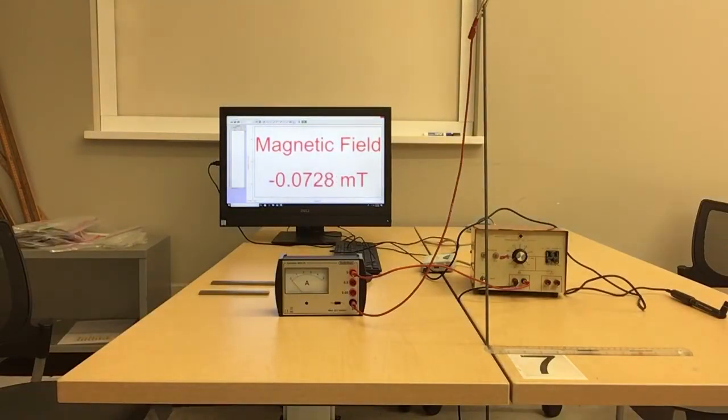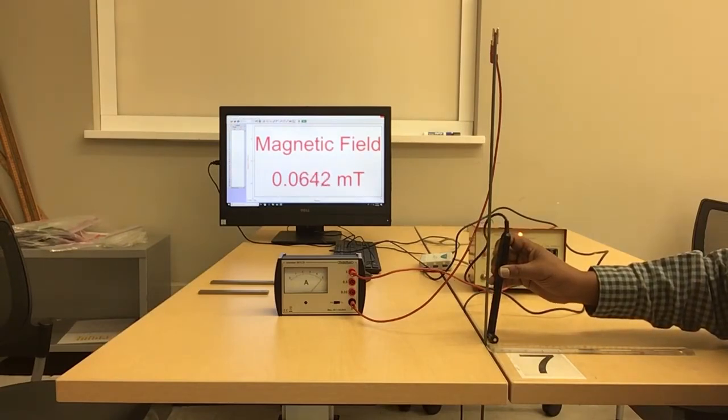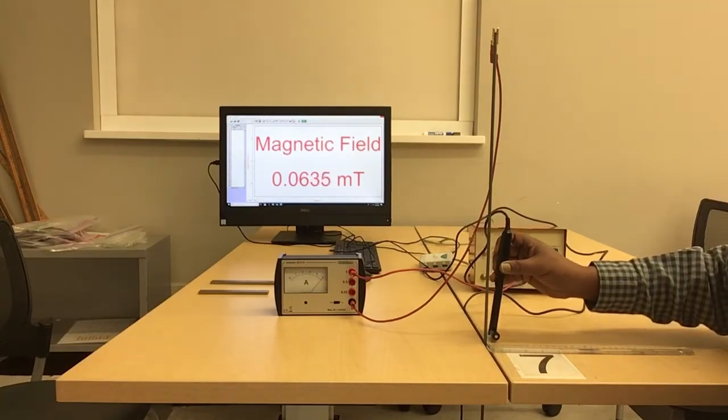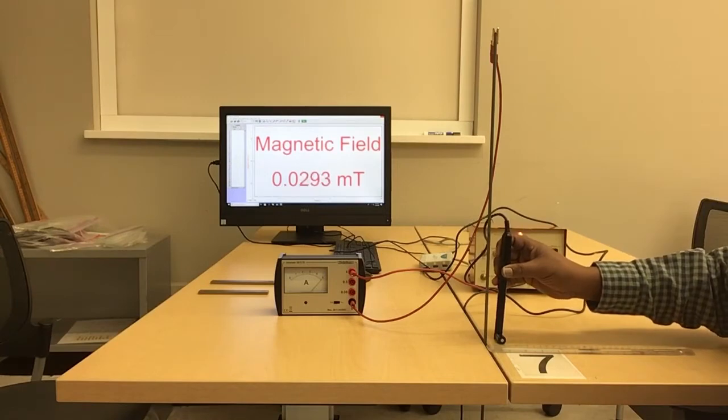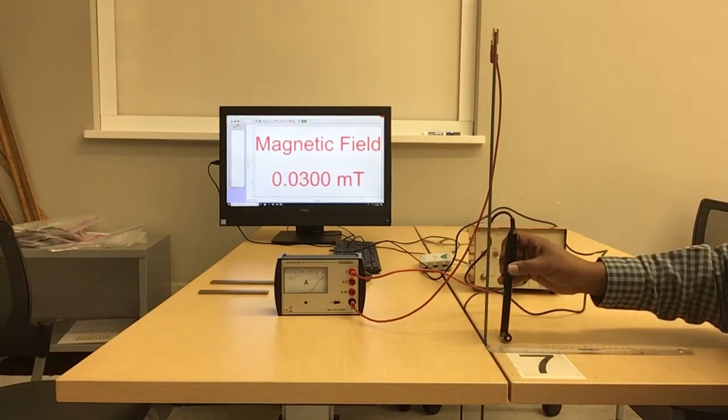All right. So let's take that measurement at one centimeter. When it's one centimeter you read about 0.06 millitesla and two centimeters away you read about 0.03 tesla.